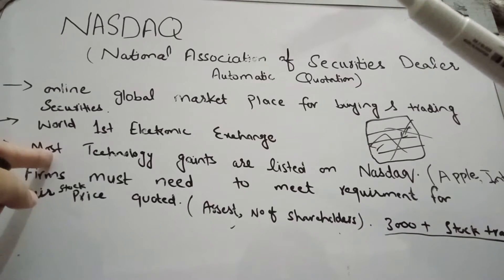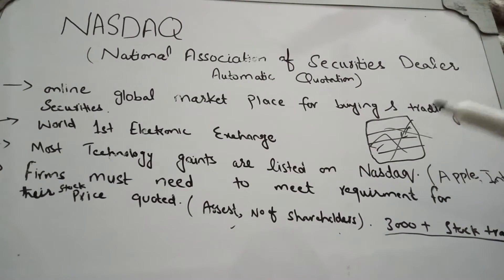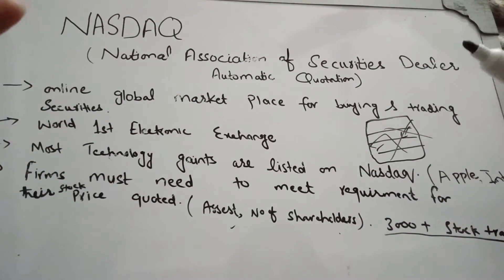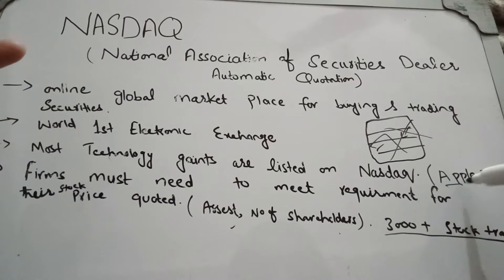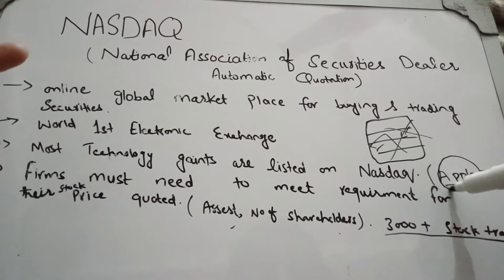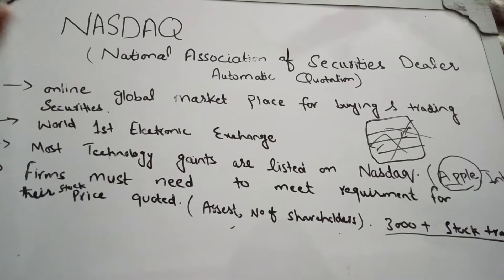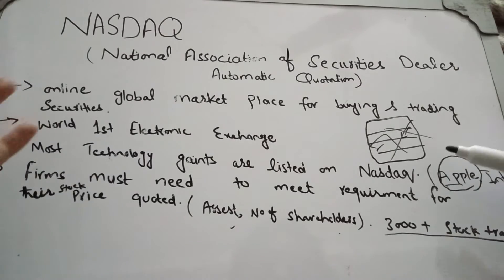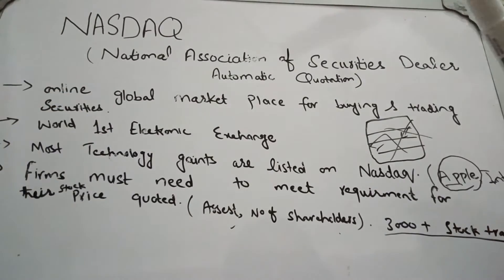That's why most technology companies are listed on NASDAQ. Most technology companies are listed on NASDAQ — Apple, Intel. Apple is a very big technology company. So most companies of this kind are listed here.